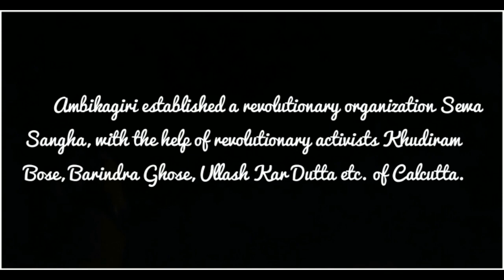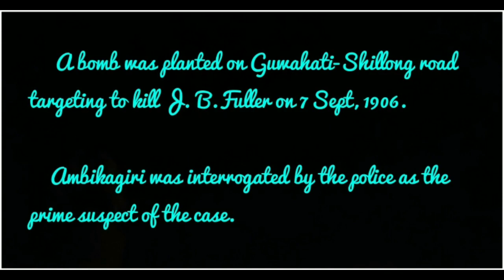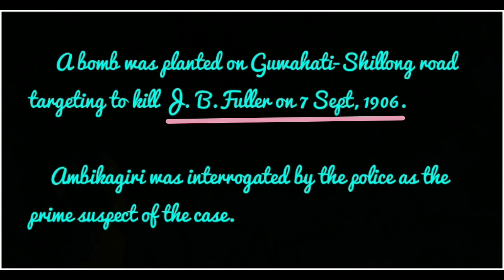Ambikagiri established a revolutionary organization called Sewa Sangha with the help of Kudiram Bose, Barindra Ghosh, and Ullaskar Dutta of Kolkata. A bomb was planted on the Guwahati–Shillong Road targeting to kill J.B. Fuller on 7 September 1906, and Ambikagiri was interrogated by the police as the prime suspect.